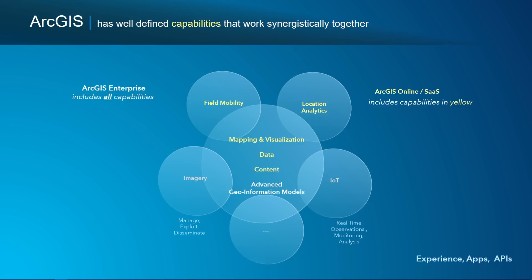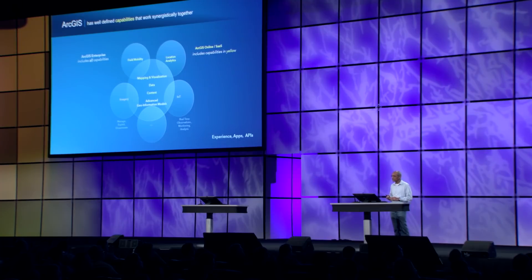ArcGIS Enterprise includes all of these capabilities and additional capabilities for data management, imagery, and real-time. In general, GIS includes all aspects of mapping and location. ArcGIS is really available in two forms: as a SaaS mapping and location platform and as GIS. And each one of these capabilities comes with experiences, apps, and APIs.